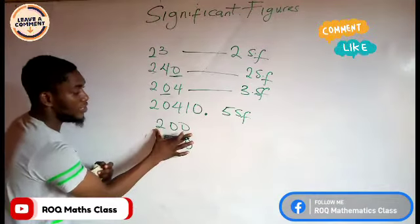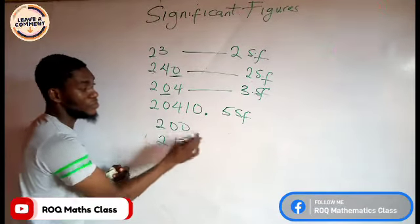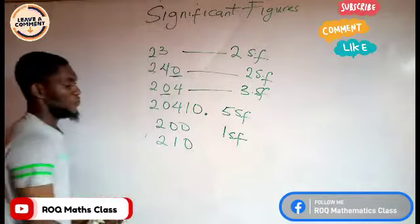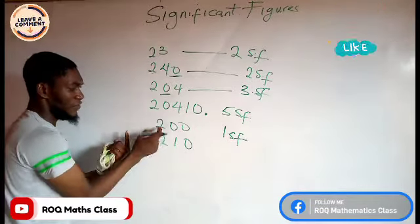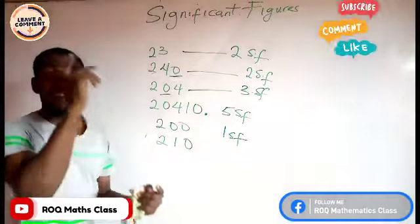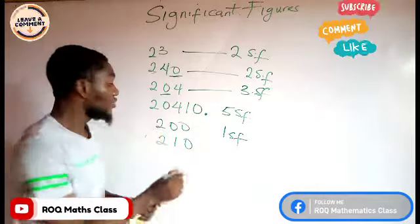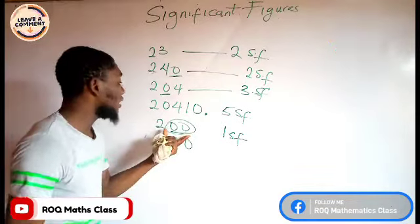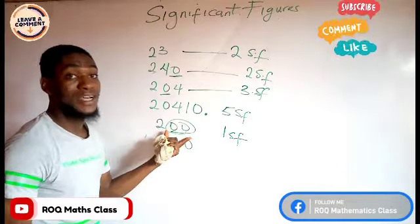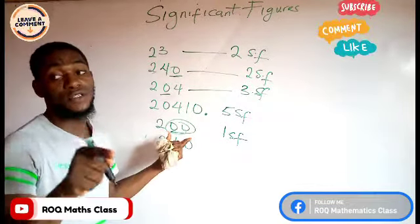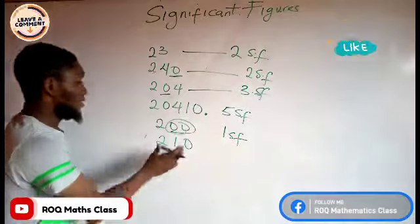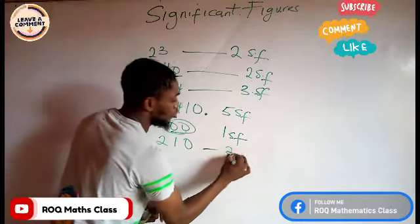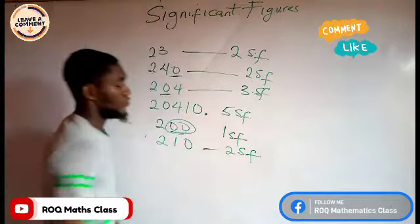Now look at this: 200. This is the same as one significant figure. You might wonder — we have one, two, three digits, but it's only one significant figure because the trailing zeros are not counted as significant figures unless there is a decimal point.